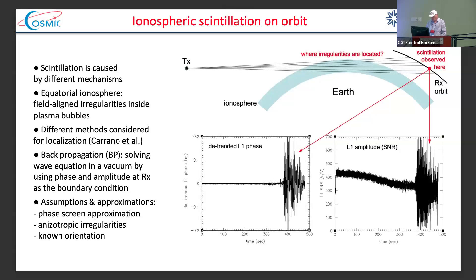So we see scintillation on orbit, but where are irregularities located? Long ago, they were just assigned to the tangent point — not anymore. Scintillation can be caused by different mechanisms, and we consider the equatorial ionosphere, where it is caused by field-aligned irregularities inside plasma bubbles. Different methods were considered for localization.